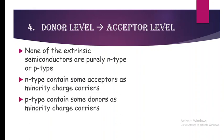Even an N-type semiconductor contains some amount of acceptors as minority charge carriers, while donors (electrons) are the majority charge carriers. In P-type semiconductors, donors are also present but as minority charge carriers, and acceptors (holes) are the majority charge carriers.